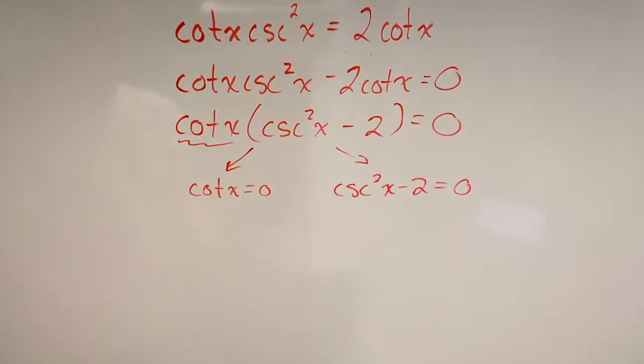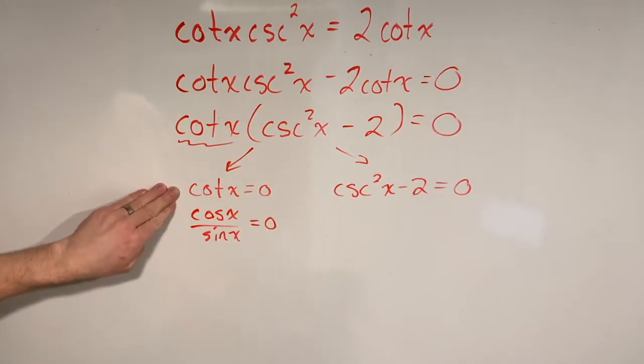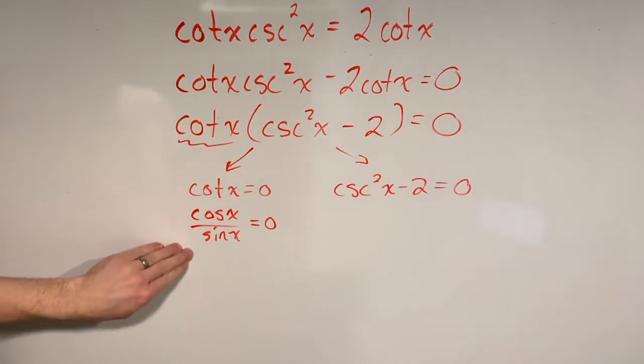Now let's start with cotangent of x. We know that cotangent of x, if you think about your identities, cotangent should be cosine over sine. I'm hoping you know that if you're solving a complex trig equation like this. Cotangent of x is just the same as cosine of x over sine of x.